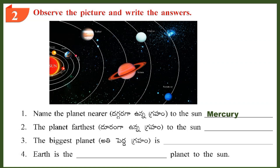Question 2: The planet farthest from the sun. Question 3: The biggest planet is a dash planet to the sun. Answer: Third.